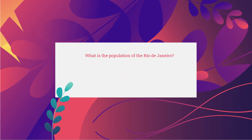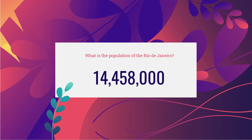Considering the Tampa Bay area is 2.8 million and the city of Tampa is almost 400,000, what do you think the population of Rio de Janeiro is? Rio de Janeiro has 14,458,000 people, compared to Tampa Bay's 2.8 million — that's about six or seven times the size. That's a lot of people.